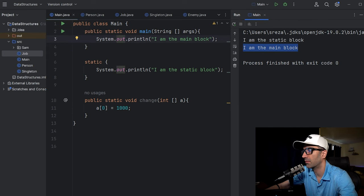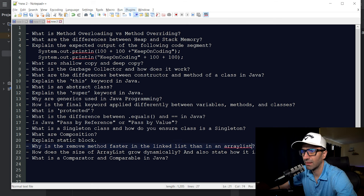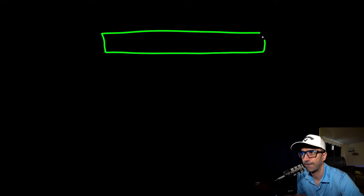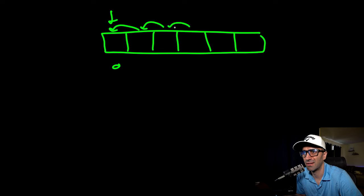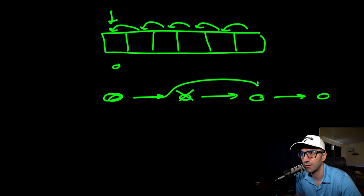Why is the remove method faster in a LinkedList than in an ArrayList? In an ArrayList (backed by an array), removing an element at index 0 requires shifting every remaining element over, which can be very slow. In a LinkedList, nodes point to each other — to remove a node, you simply update one pointer to skip it and point to the next node. Only one operation is needed versus potentially shifting every element.